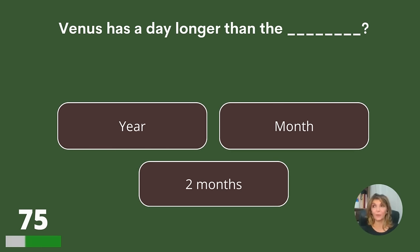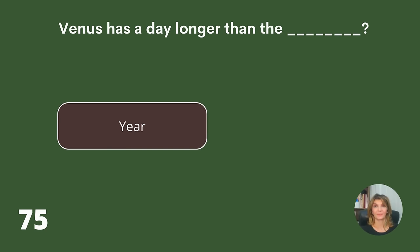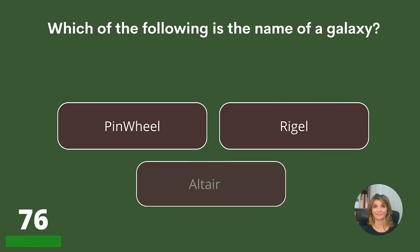Venus has a day longer than the year, month, or two months? Answer: Year.